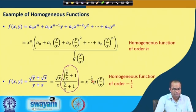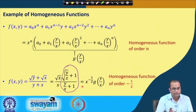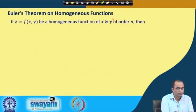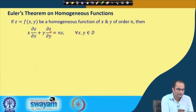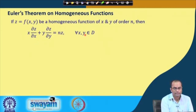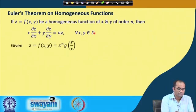The importance of homogeneous functions lies in Euler's theorem: if z is a homogeneous function of x and y of order n, and the partial derivatives exist, then x·(∂z/∂x) + y·(∂z/∂y) = n·z for all (x, y) in the domain. This means we do not have to compute these partial derivatives separately if we know the function is homogeneous of order n.